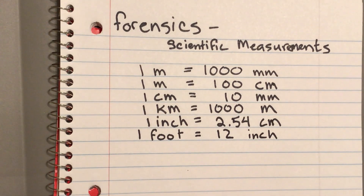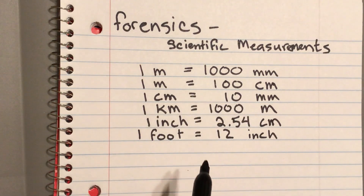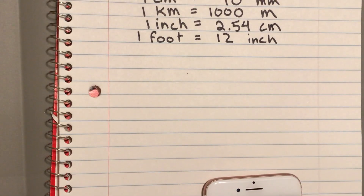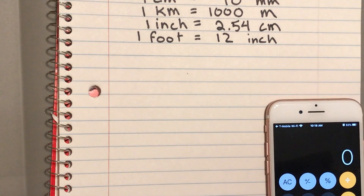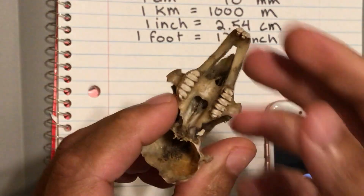You can't do any conversions unless you know something about the metric system. Commit these numbers to memory — no matter what conversions you have to do, you will use some of these numbers to get your conversions done.